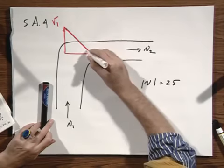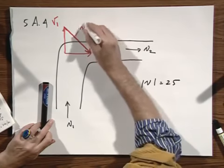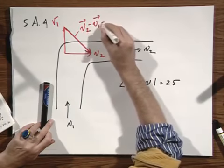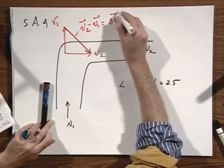Then the change in velocity, this one is V2 minus V1, and let's call that for simplicity Delta V.